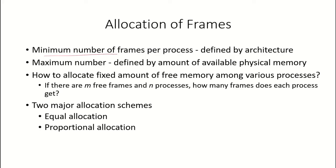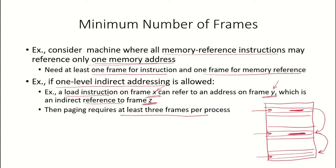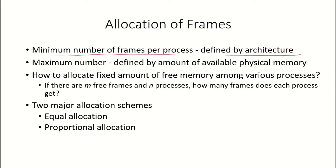The minimum number of frames per process is defined by the instruction set architecture of the machine. If indirect addressing is not allowed, two frames suffice. If indirect addressing is allowed, three frames are needed. Depending upon the addressing modes defined by the architecture, the minimum number of frames per process can be determined.